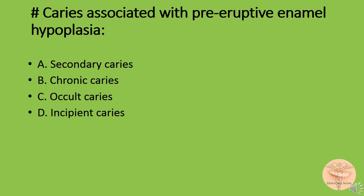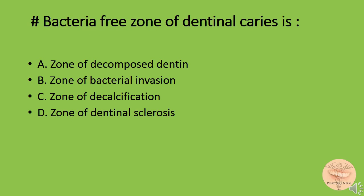Caries associated with pre-eruptive enamel hypoplasia is: option A) secondary caries, option B) chronic caries, option C) occult caries, or option D) incipient caries. The correct answer is option A. The zone that is not affected in dentinal caries zones — the correct answer is option D: zone of dentinal sclerosis.